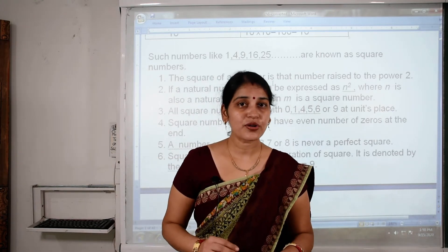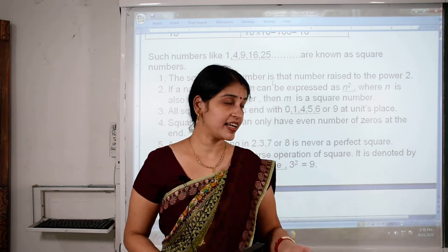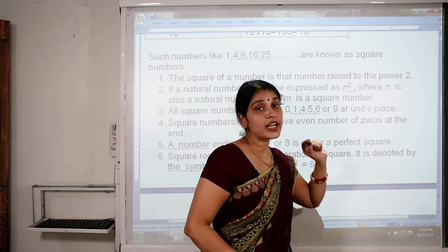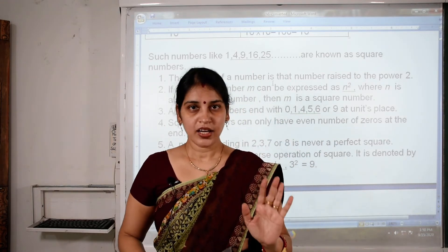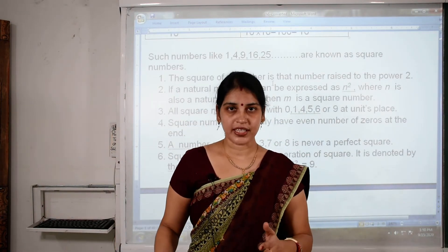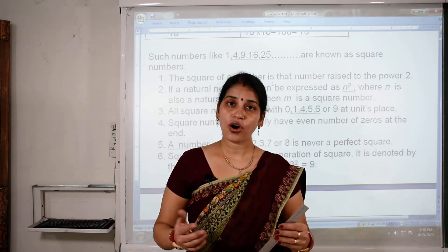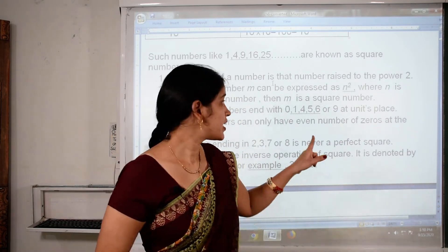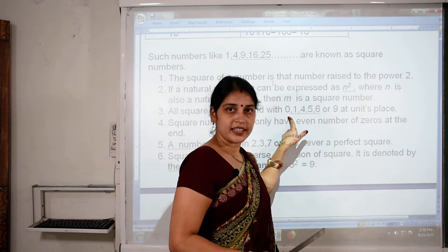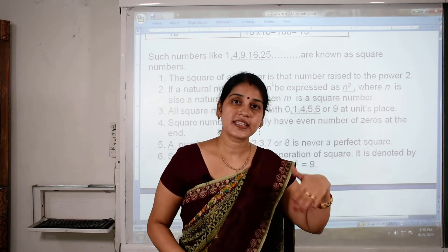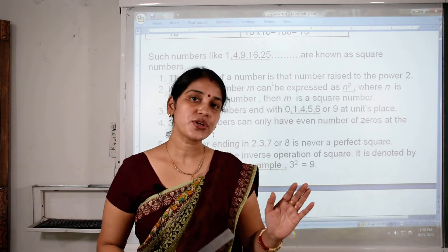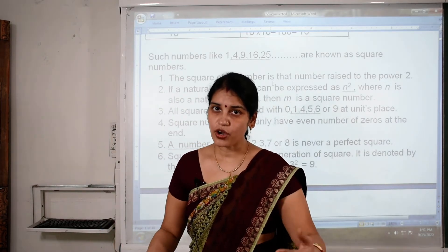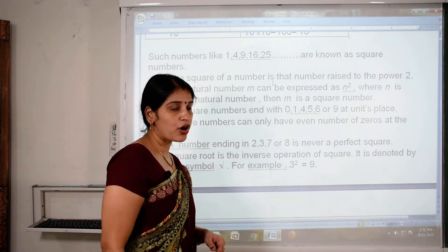For example, is 441 a perfect square? The last digit of 441 is 1, and 1 appears in our list. So 441 is a square number. In this way, we can easily identify whether a given number is a perfect square or not. This is the property of squares based on unit place digit.